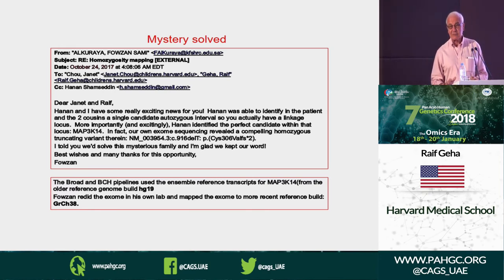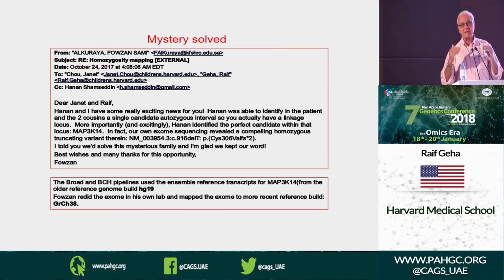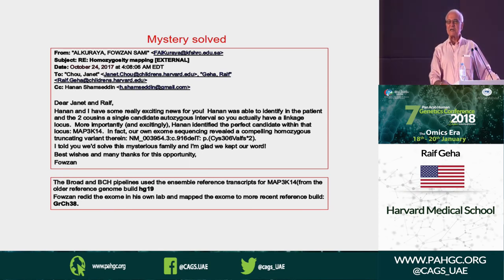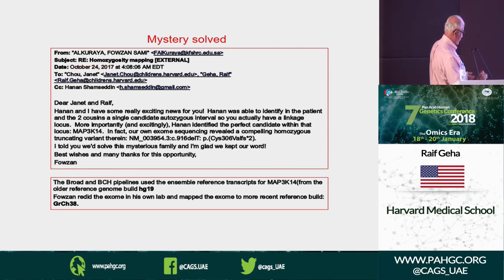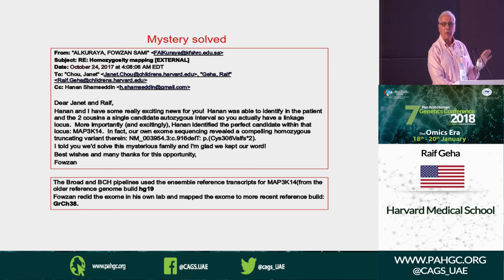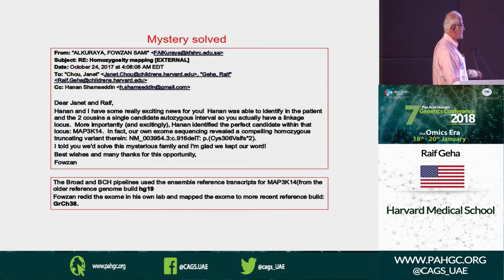I, the stupid immunologist knowing nothing about genetics, quickly googled MAP4K4 at breakfast — notice the time was 4 a.m. plus 7, so 11 p.m. I work late. I went and told my wife: 'We have a new gene, MAP4K4.' And MAP4K4 is the gene that codes for NIK. So our studies were showing a problem with NIK expression and this confirmed it. It turns out the Broad and Boston Children's Hospital used the Ensembl reference transcript for MAP4K4 from the older reference genome build hg19, while Fawzan mapped to the more recent build GRCh38 — and found it.